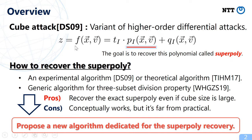In cube attack, the function f is the target — this is the stream cipher — x is the secret, and v is the public. We assume the function f is decomposed like these equations. The goal is to recover this polynomial called superpoly. If we can recover a simple superpoly, then we can attack the stream cipher.